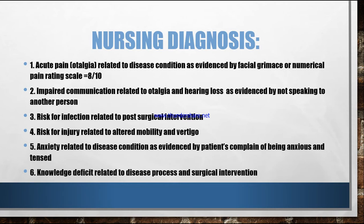Third is risk for infection related to post-surgical intervention. Fourth is risk for injury related to altered mobility and vertigo. Fifth is anxiety related to disease condition as evidenced by patient's complaint of being anxious and tense. And the sixth is knowledge deficit related to disease process and surgical intervention. These are the six important nursing diagnoses — a general nursing diagnosis for ENT disease.